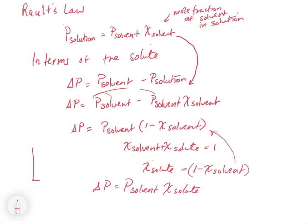Remember, delta P is not the vapor pressure of the solution. Delta P is the difference in the vapor pressure of the solution relative to the vapor pressure of the pure solvent. When you solve for delta P using this equation, you then use the original vapor pressure of the solvent to work out the vapor pressure of the solution.